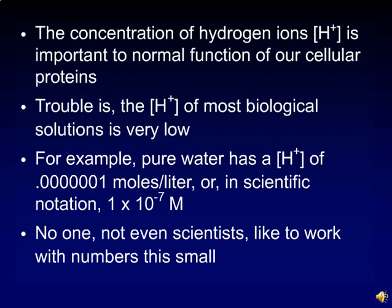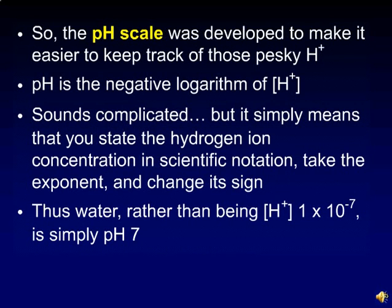No one, not even scientists, like to work with numbers this small. The pH scale was developed to make it easier to keep track of those pesky hydrogen ions. pH is defined as the negative logarithm of the hydrogen ion concentration in moles per liter.